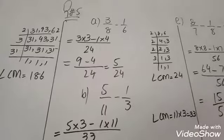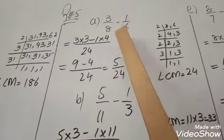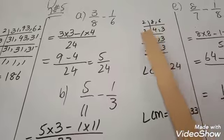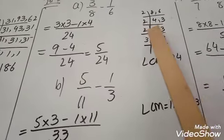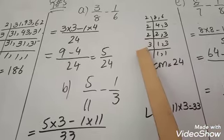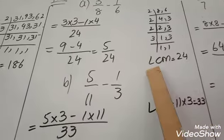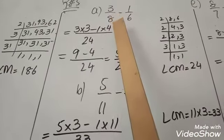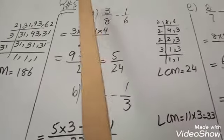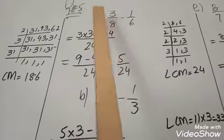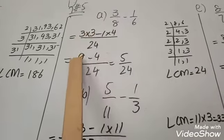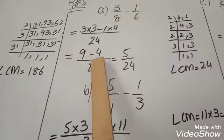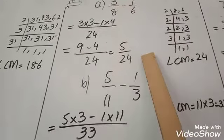Again we take LCM of 8 and 6: 2 times 4 is 8, 2 times 3 is 6, 2 times 2 is 4, then 3 as it is, 2 times 1 is 2, 3 as it is. Then we take 3 — so LCM is 24. We write 24. First value is 8 — 8 times 3 is 24, so multiply the numerator by 3. 3 times 3 is 9, minus 1 times 4 equals 9 minus 4, which equals 5/24. Next: these are prime numbers so LCM is 33. Write 33. 11 times 3 is 33, so multiply 5 by 3. Minus: 3 times 11 is 33, so multiply by 11. 5 times 3 is 15, minus 11 equals 4/33. That is your answer.